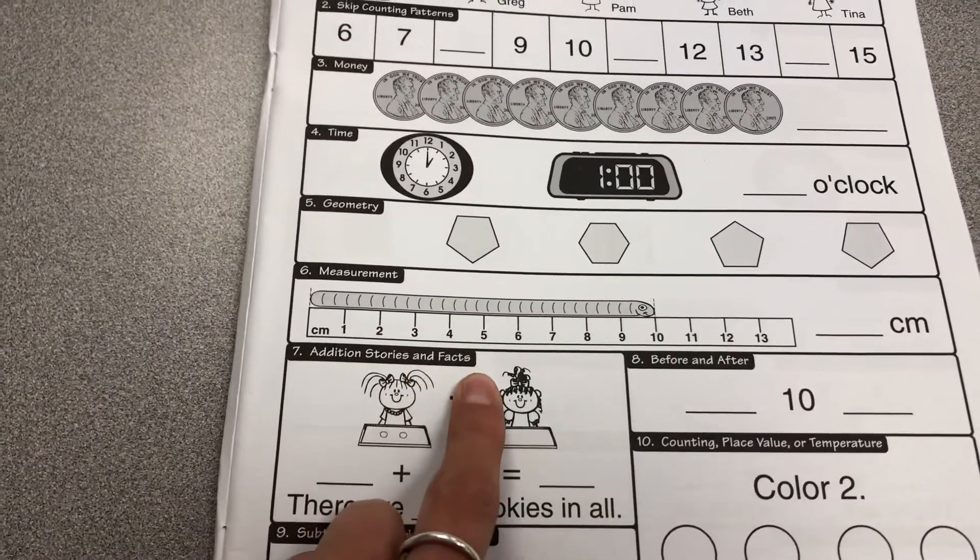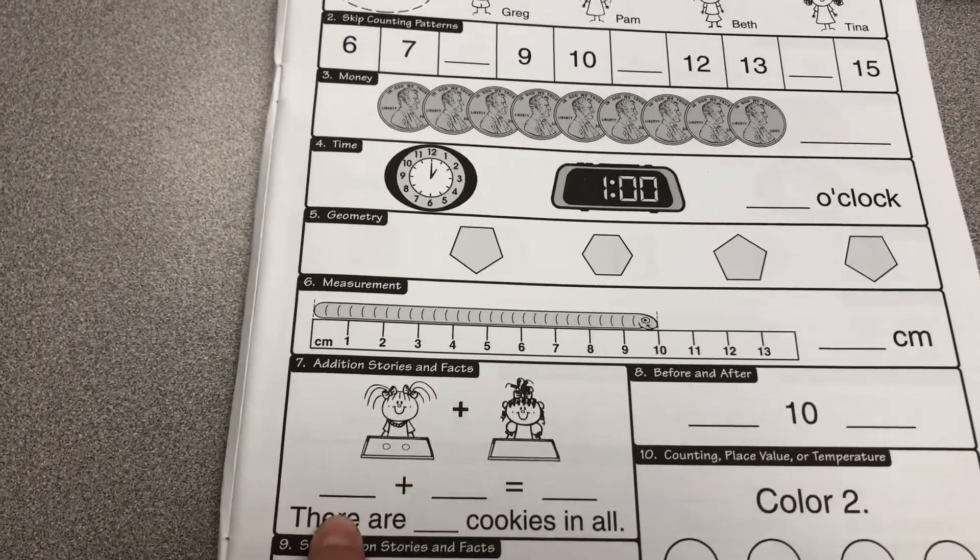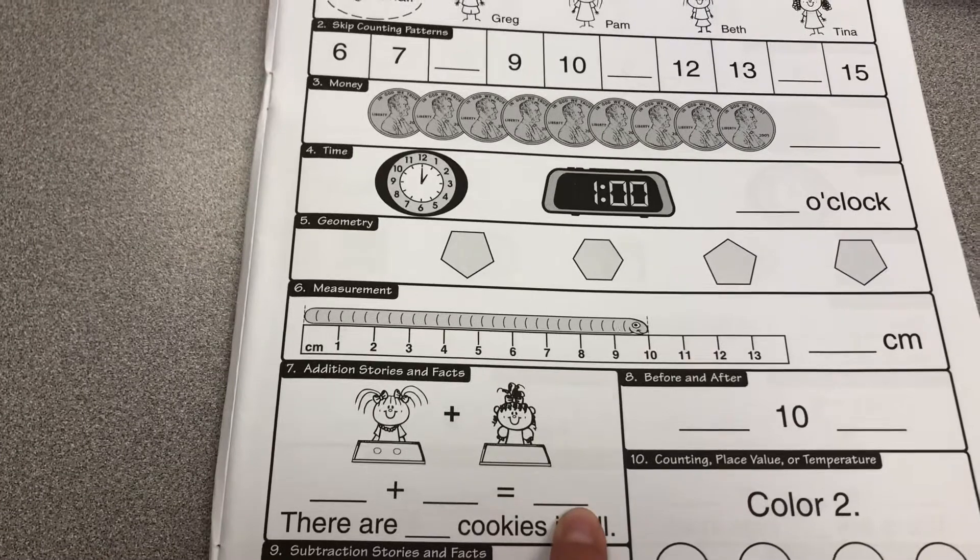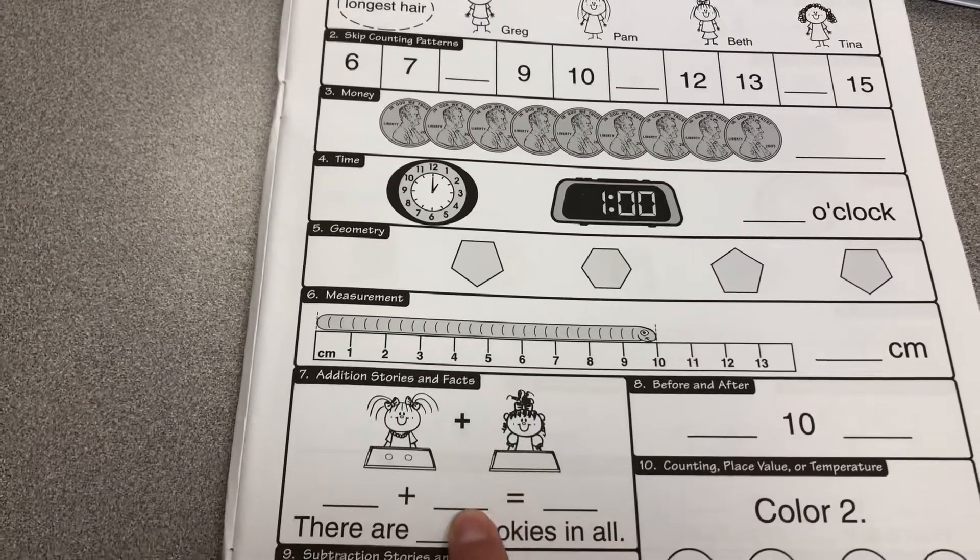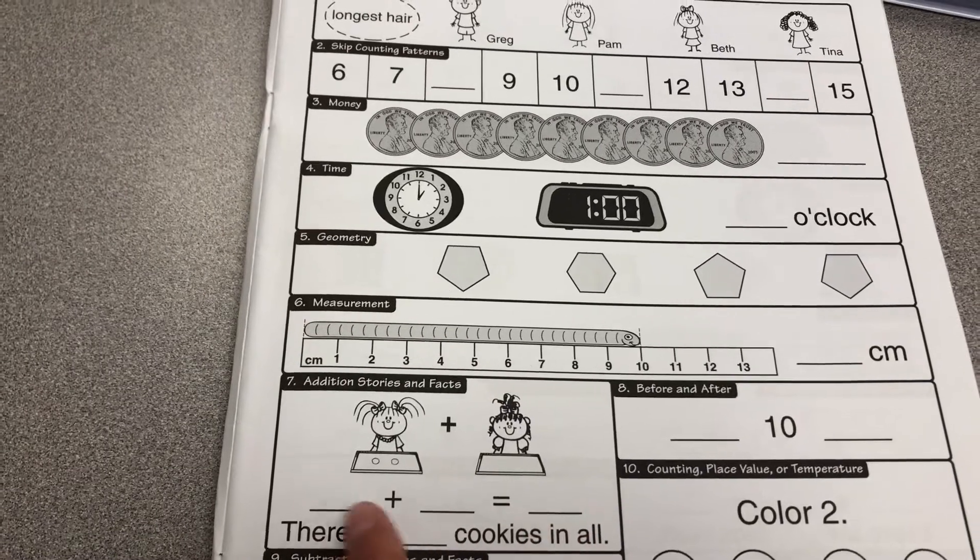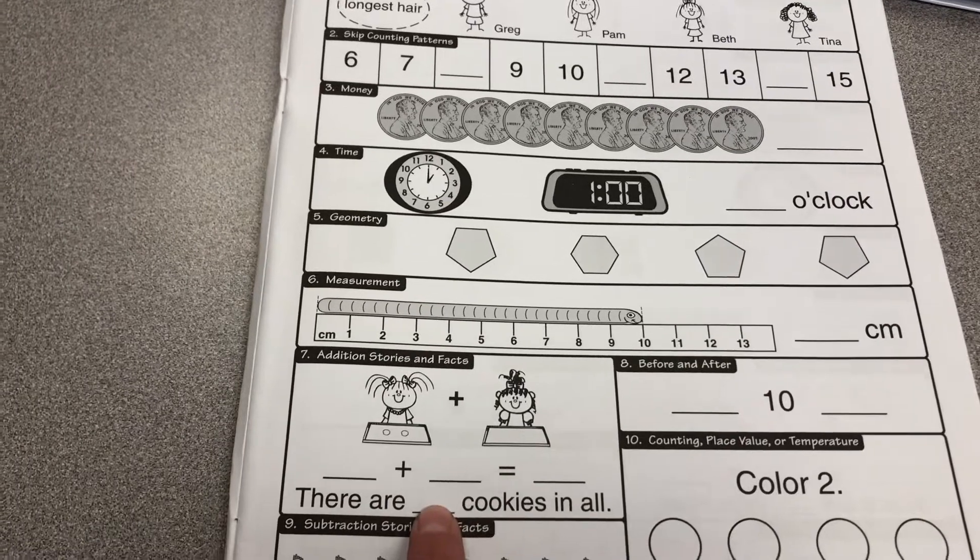Adding stories and facts. Looking at the tray in front of these children, write the number to create a number sentence. This number will go here. This one here. And there are some here. Don't forget to repeat that number here.